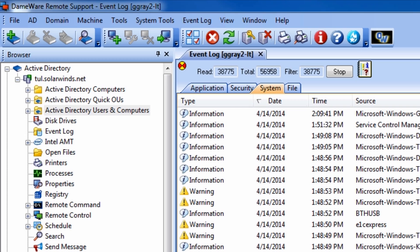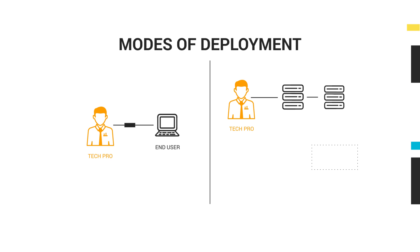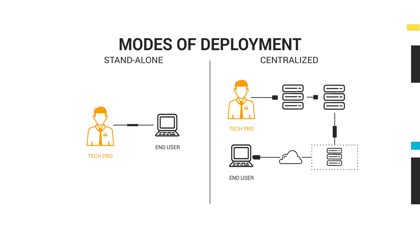These tools are packaged neatly into a familiar and easy-to-use Microsoft Management Console, or MMC-style interface. Depending on your organization's needs, DRS can be deployed in one of two modes: Standalone or Centralized. Let's cover these two modes in a little more detail and then jump into the systems administration tools.